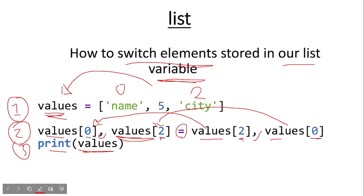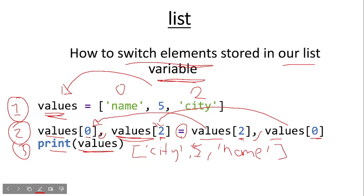When we use the print function we will confirm that our switching has been successful. The values elements switched places, so we will get 'city' at index 0 and 'name' at index 2. We have successfully switched the elements and their places.